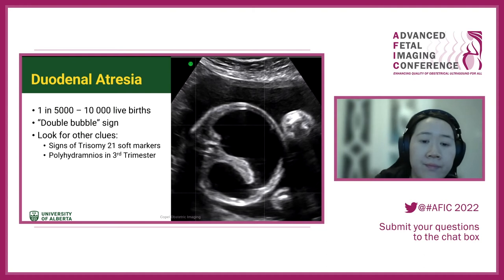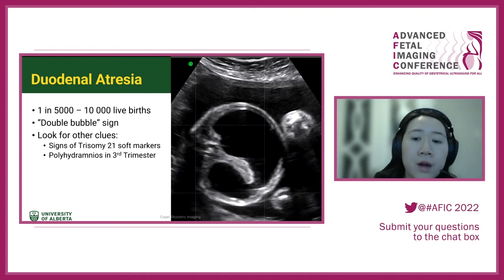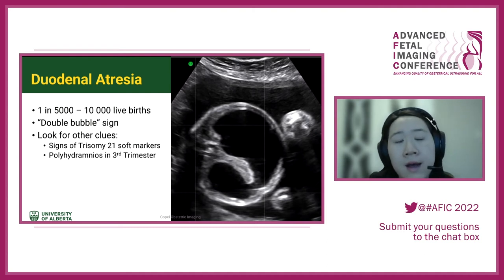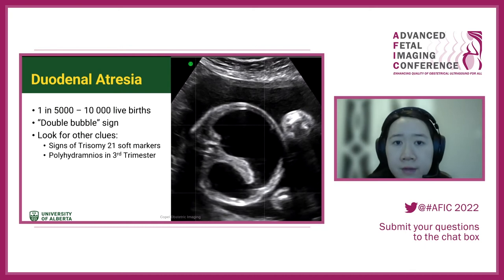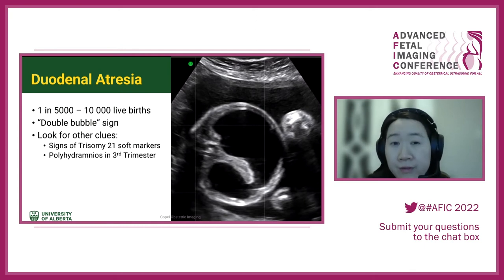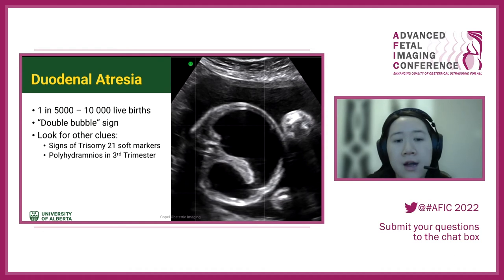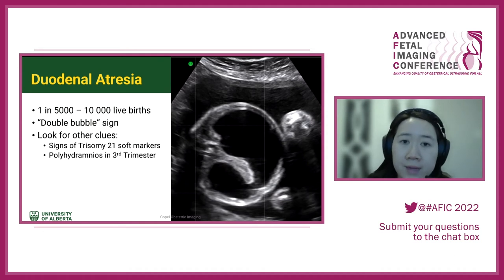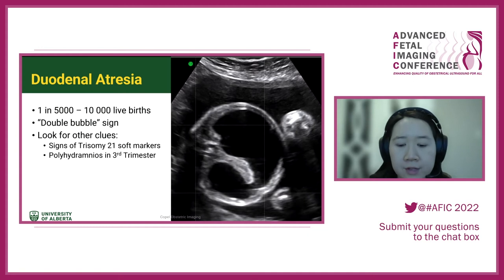About a third of duodenal atresia cases will be associated with aneuploidy — specifically trisomy 21 — so look for other signs or soft markers on ultrasound. It can also present with polyhydramnios in the third trimester.